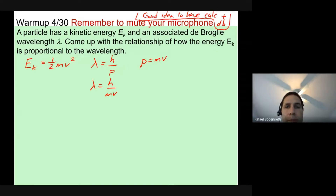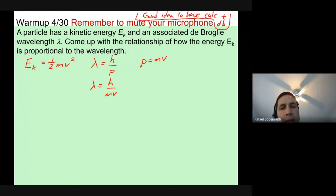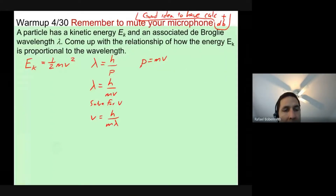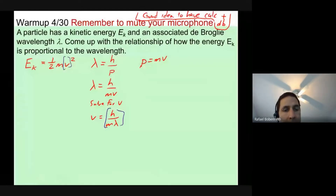I want to link lambda with kinetic energy. The simplest way is to solve the de Broglie equation for velocity — just a couple of algebra steps. I'll bring velocity to the left and lambda to the right, switching spots. Now that I have an expression for v, I can substitute it into the kinetic energy equation.